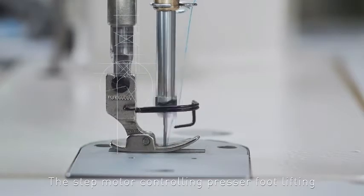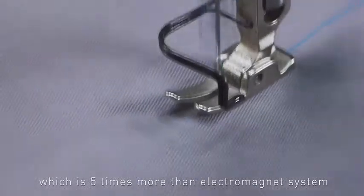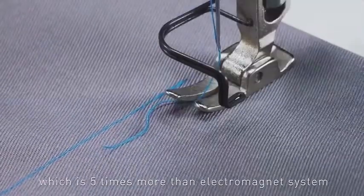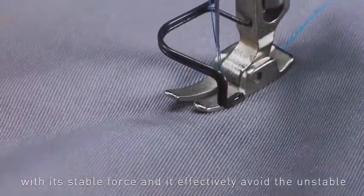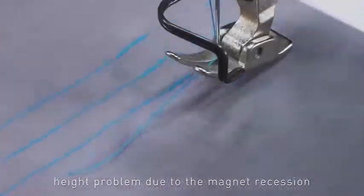The step motor controlling presser foot lifting has a lifespan five times longer than electromagnet systems. With its stable force, it effectively avoids the unstable height problem caused by magnet recession.